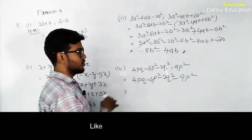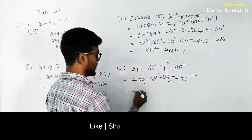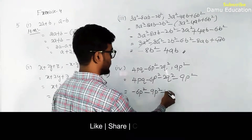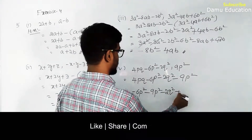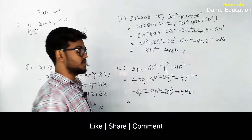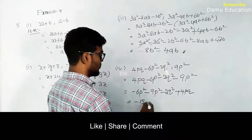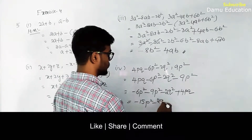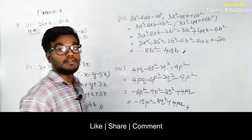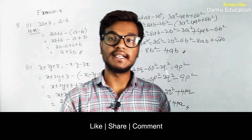Fourth question: 4pq minus 6p squared minus 2q squared, minus 9p squared. Write p squared and q squared terms together, then pq terms. Minus 6p squared minus 9p squared becomes minus 15p squared, minus 2q squared, plus 4pq. So we get minus 15p squared minus 2q squared plus 4pq.